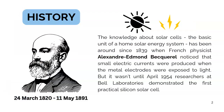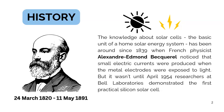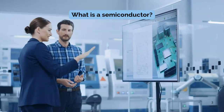It was in 1839 when the French physicist Alexandre Edmond Becquerel noticed that when he exposed metal electrodes to sunlight, a small amount of current starts flowing. This was the discovery of solar electricity, which paved the way to solar photovoltaics. But it wasn't until April 1954 when researchers at Bell Laboratories demonstrated the first practical silicon solar cell.